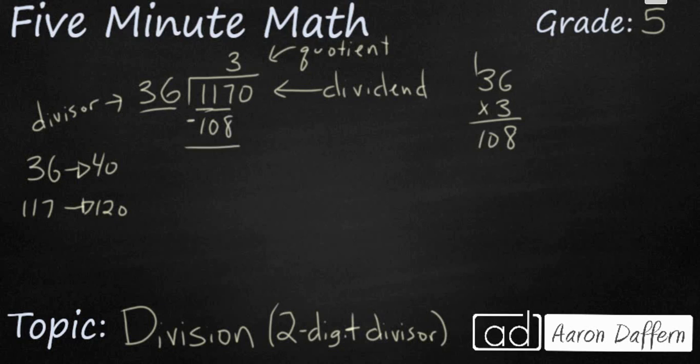We need to subtract. And what we need to do is make sure that this answer right here is less than our divisor. So 9 is less than 36. That means we're good. We're ready to bring down the next number. So let's bring down this zero.